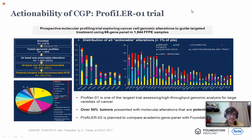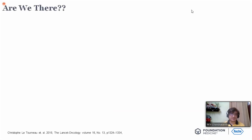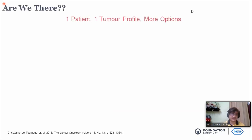The actionability of CGP is demonstrated by the PROFILER-1 trial — one of the largest trials assessing high-throughput genomic analysis for a large variety of cancers. Over 50% of tumors presented with molecular alterations that are potentially actionable. PROFILER-2 is planned to compare an academic gene panel with Foundation Medicine.